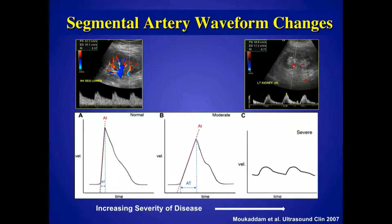From an Ultrasound Clinics article, you can see that with increasing severity of disease, there's prolongation of that delay. The first waveform is the normal one — rapid systolic upstroke, perpendicular to the baseline. With increasing stenosis, you start to see delay until it's finally completely rounded with a very tight stenosis.